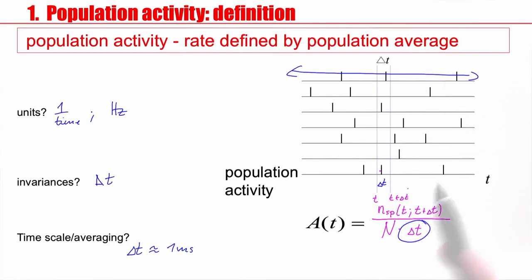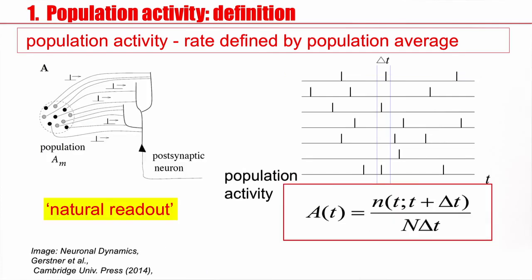Now suppose you record from a population of 100 neurons and you get in this time step delta t, you get a firing rate of 25 hertz. Your colleague records from 50 neurons, but exactly the same neurons in the same area. He also gets 50 hertz because you divide by the number of neurons that you have recorded from. So this is a useful quantity. It's the population activity. It's a firing rate defined by a population average. And we can also say it's a bar because we still average over small time step delta t. But, as I said, delta t is maybe one millisecond or two milliseconds or three milliseconds. So it's really short. It's not averaged over 500 milliseconds or something.